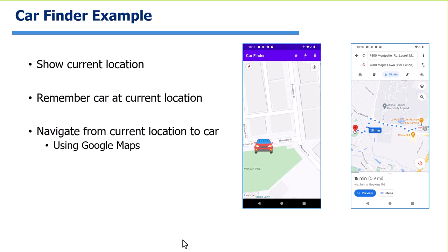The car finder application will have a map with a couple of icons at the top. The star icon saves your current location as where the car is - as soon as you get out, you tap it and it remembers. When you want to get back, you tap the walk icon, which takes your current location and sends it to the Google Maps application with your target location so you know where to walk. The trash can icon deletes the saved location.